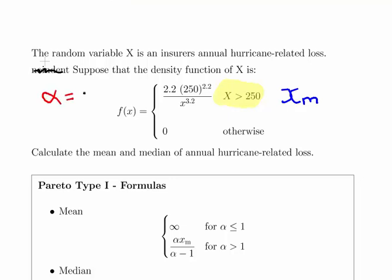Here, alpha is 2.2. We have alpha times Xm to the power of alpha, 2.2, divided by X to the power of alpha plus 1. Alpha plus 1 is equal to 3.2.